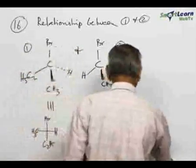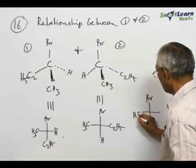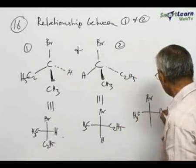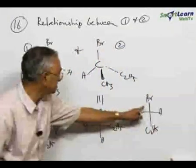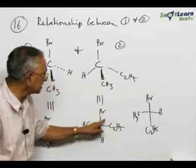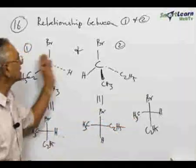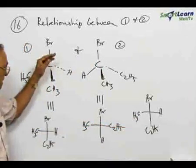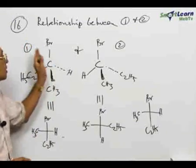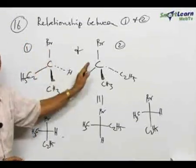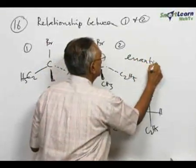For example, all the things are same excepting that Br, CH3, now bring the H here and bring the C2H5 here. The two compounds are identical. This and this are identical. This structure has been converted to this by one exchange or one interchange. Therefore, the relationship between the two compounds is they are enantiomers. Even though they are present in wedge projection, the relationship is that 1 and 2 are related as enantiomers.